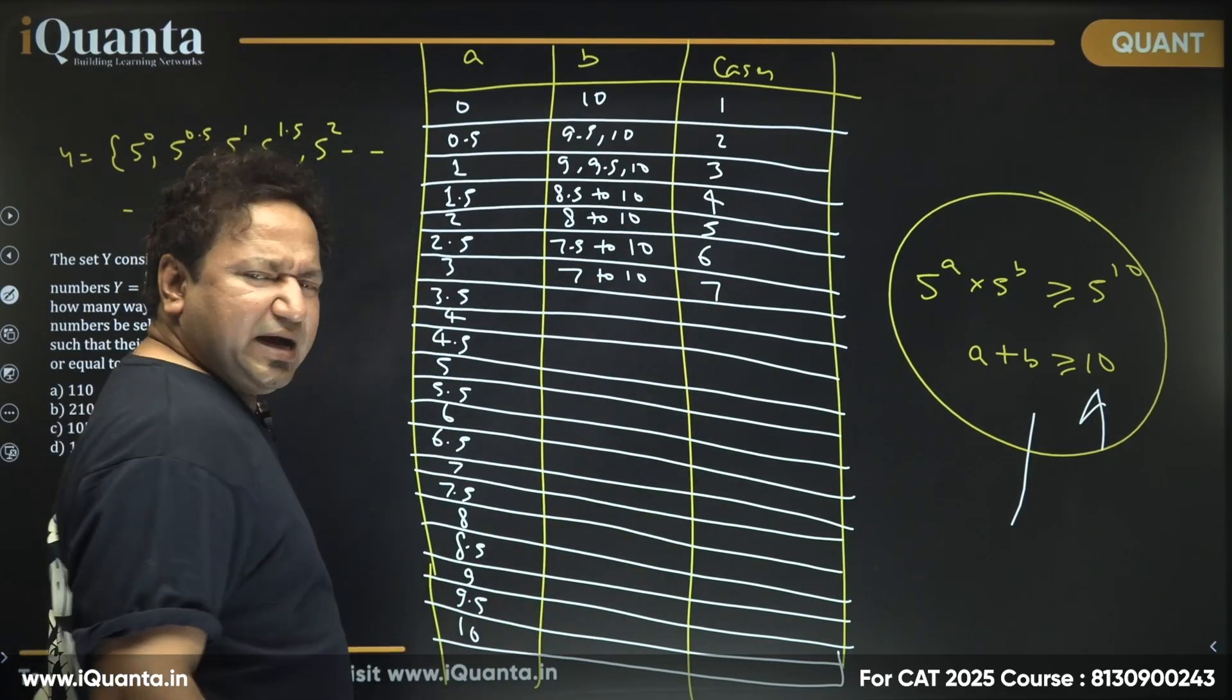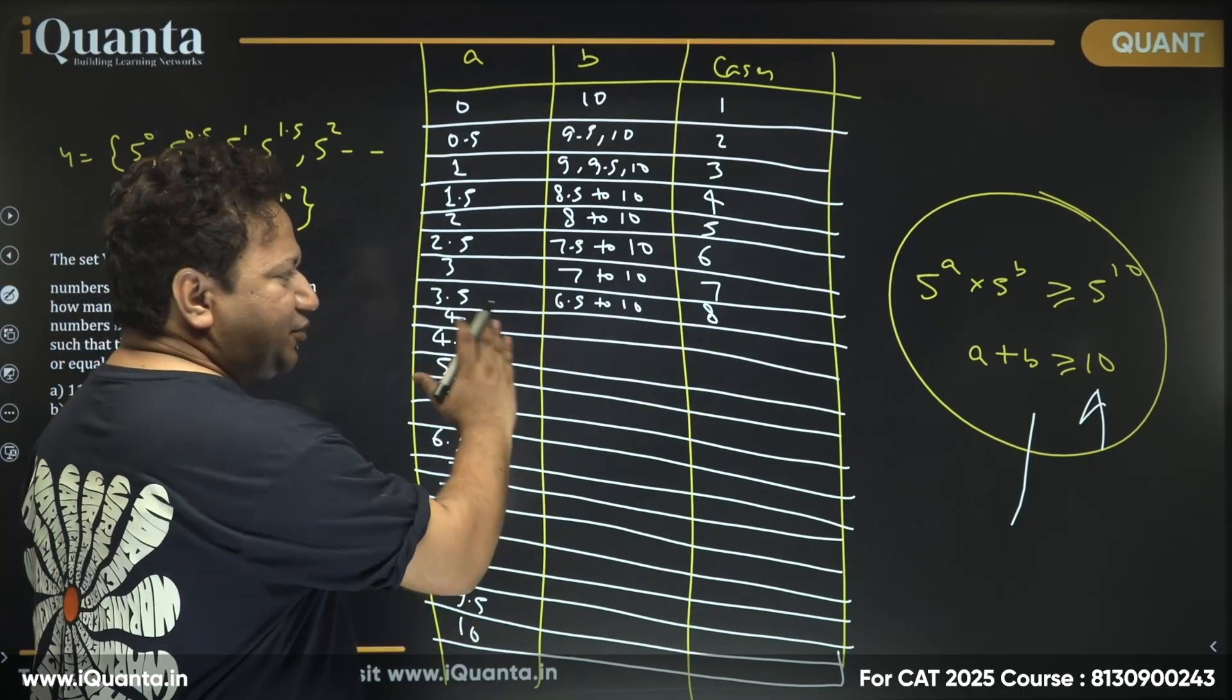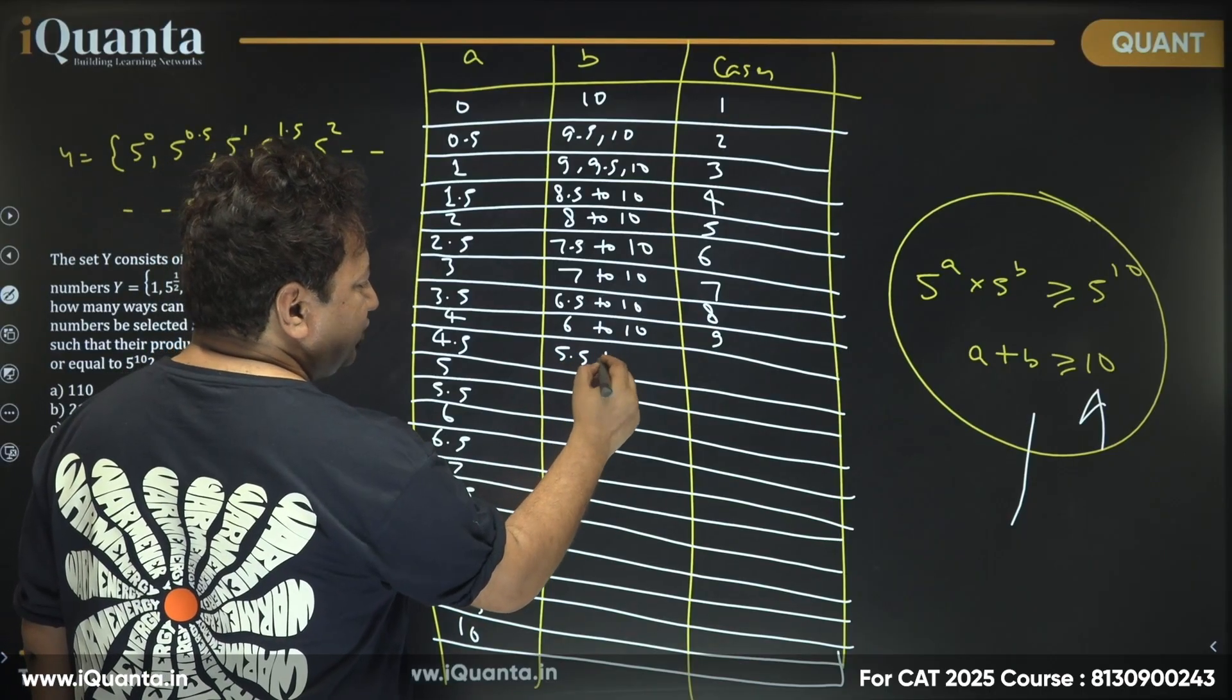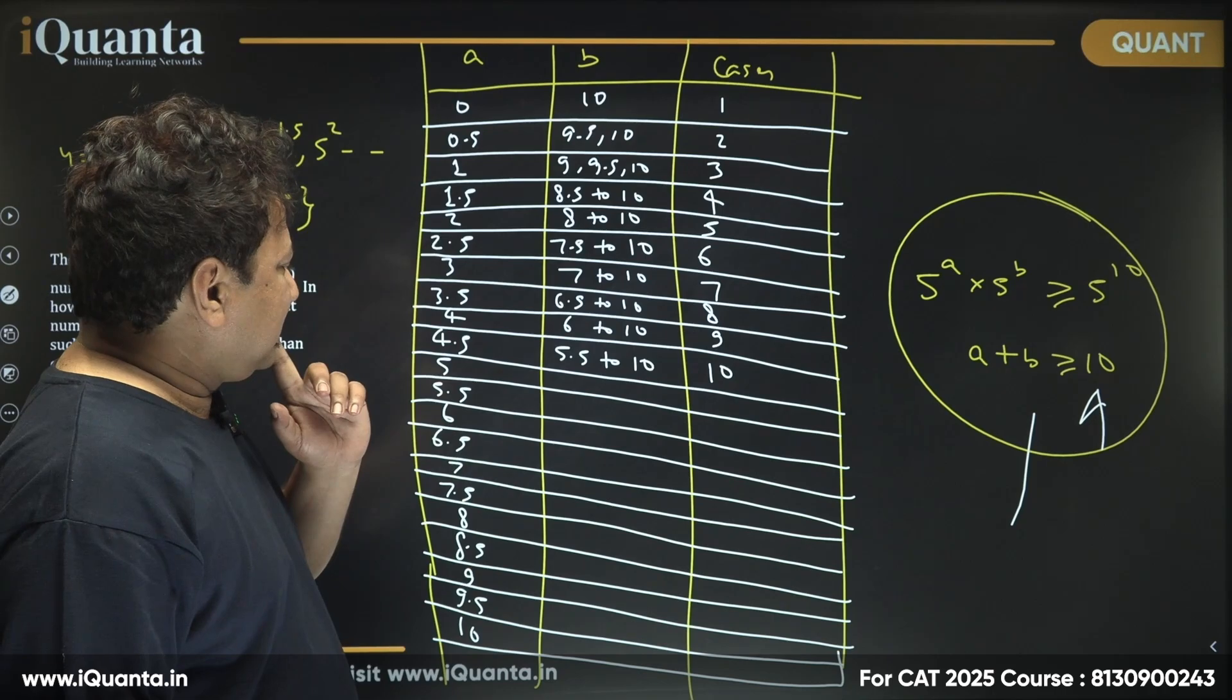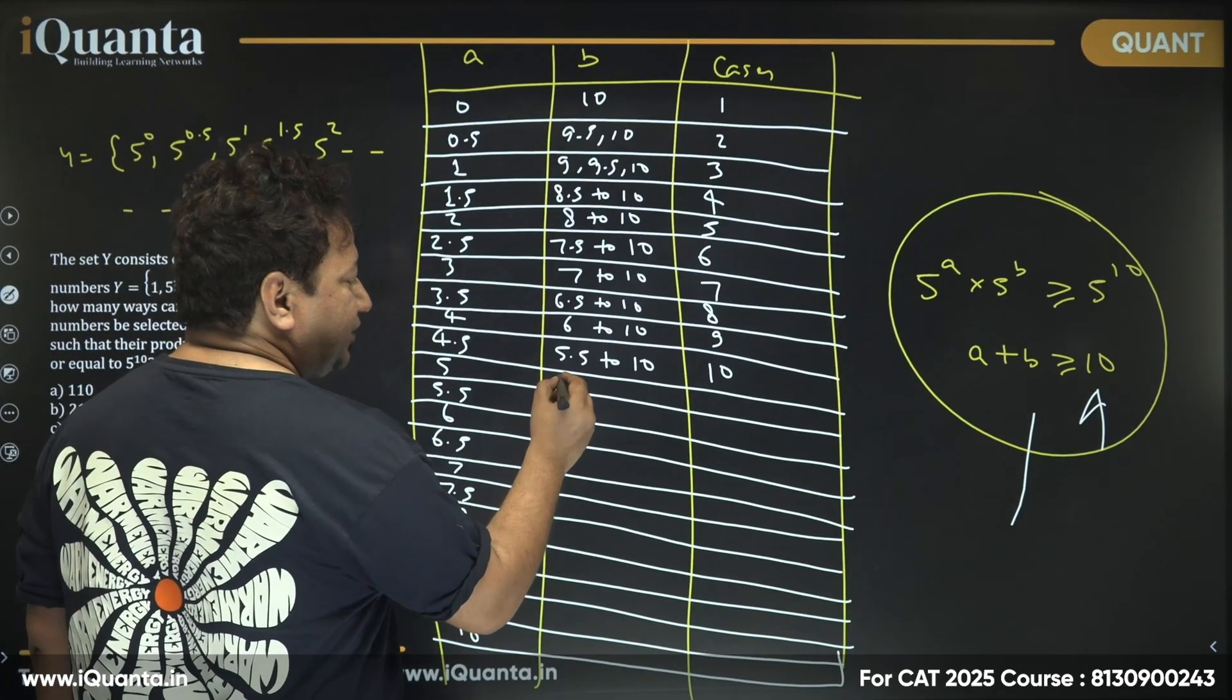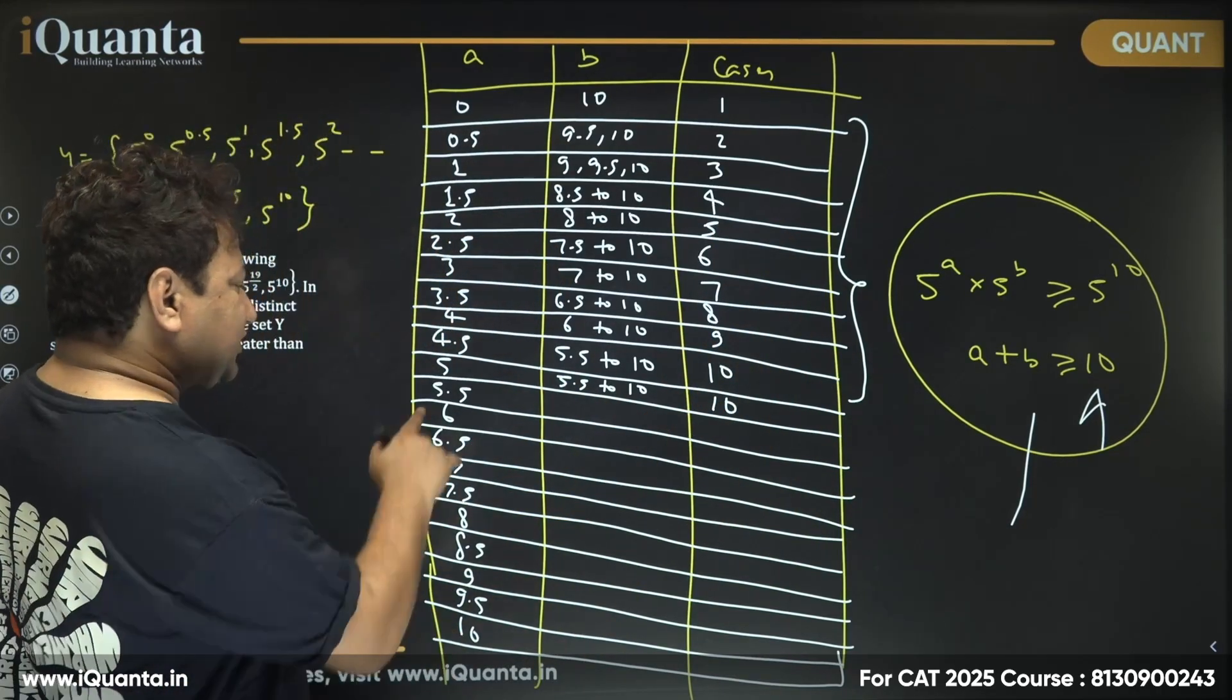For 3, 7 to 10 will have 7 such values. For 3.5, 6.5 to 10 will have 8 such values. From 4, 6 to 10, there will be 9 such values. For 4.5, 5.5 to 10, I'll have 10 such values. Now it is 5. If it is 5, looks like it should be 5 to 10, but that's not possible. Why? Because we need to choose a and b as distinct numbers, they can't be same. So I cannot start from 5 to 10. I can only start from 5.5 to 10, which makes it 10 possibilities. Now this entire pattern has somehow broken, isn't it? From 1 to 10 and then it becomes 10.